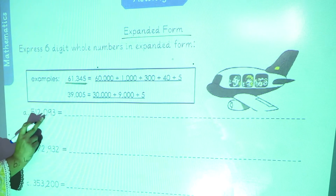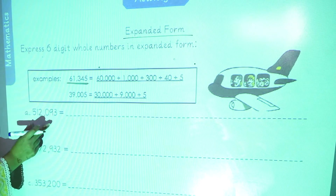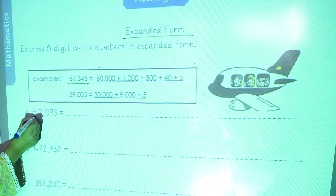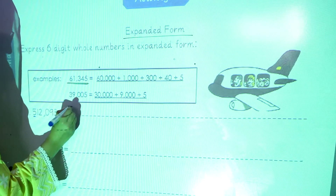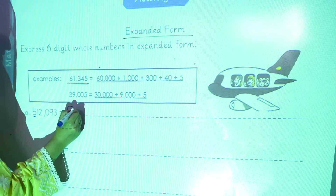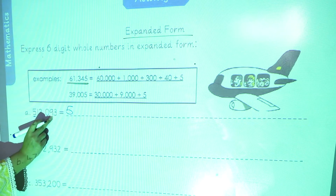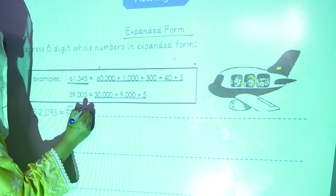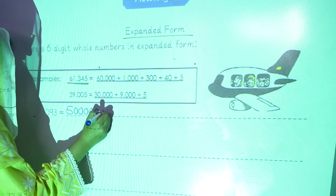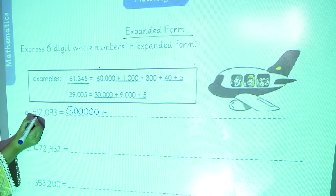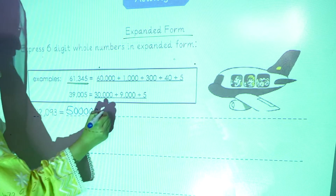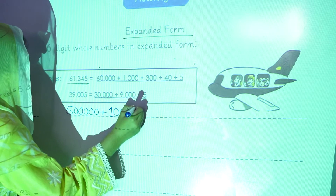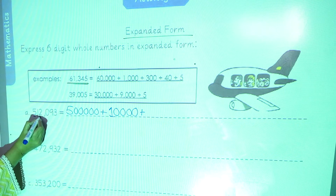The 'a' part is five hundred twelve thousand and ninety-three. We will express this number in expanded form. We will take the first digit, five, and the remaining digits will be zeros — we will write five zeros here. Now we will take the second digit, one, and the remaining will be zeros.